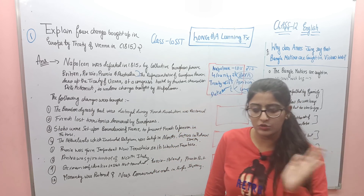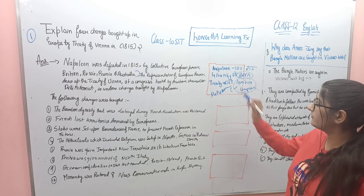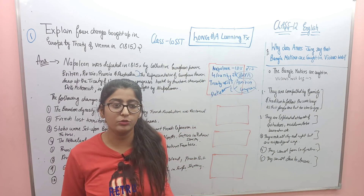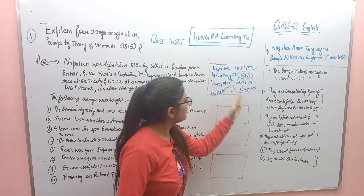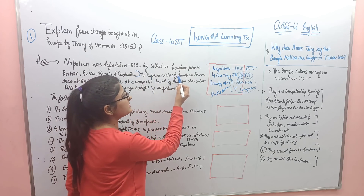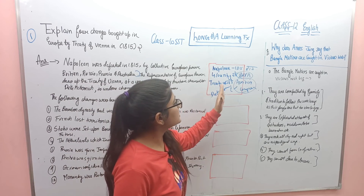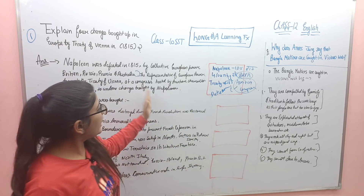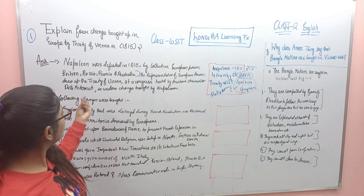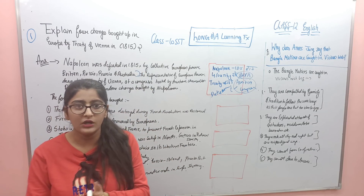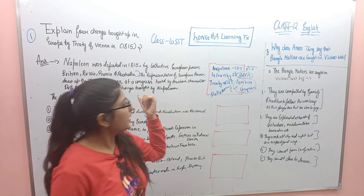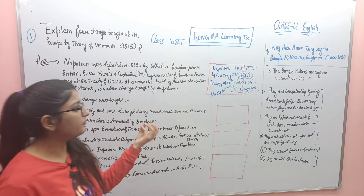Napoleon ne jo kuch bhi kiya tha Europe ke andar, usse waapas settle karne ke liye — agar tum English mein convert karo, tumhare paas bas yeh keywords hain: Napoleon 1815 hara. Toh tum sochoge: 'Napoleon was defeated in 1815.' Four countries se — Britain, Russia, Prussia, and Austria. The treaty was formed at Austria congress headed by Chancellor Duke Metternich.